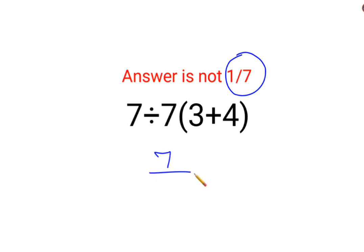We have 7 divided by 7, and we have this—let me write this correctly—7 divided by 7 multiplied by bracket, which is 3 plus 4, which is also 7.